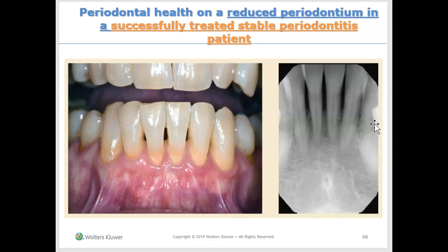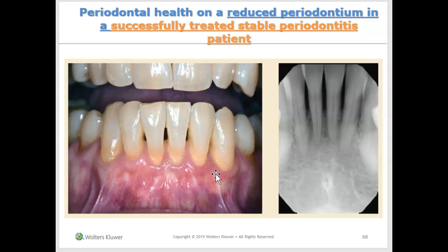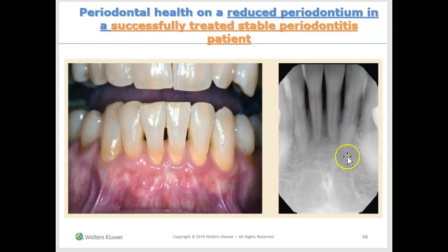When we have a patient who has healthy gums, had bone loss in the past, but it is successfully treated — they are brushing, flossing, coming to see the dentist or hygienist regularly, and maintaining their oral health — this is a person we classify as having periodontal health on a reduced periodontum. Reduced because they have some recession and their gums have gone down. But this person has successfully treated stable periodontitis, meaning they had bone loss in the past, but the bone level is stable and not worsening over time. This is the third category.